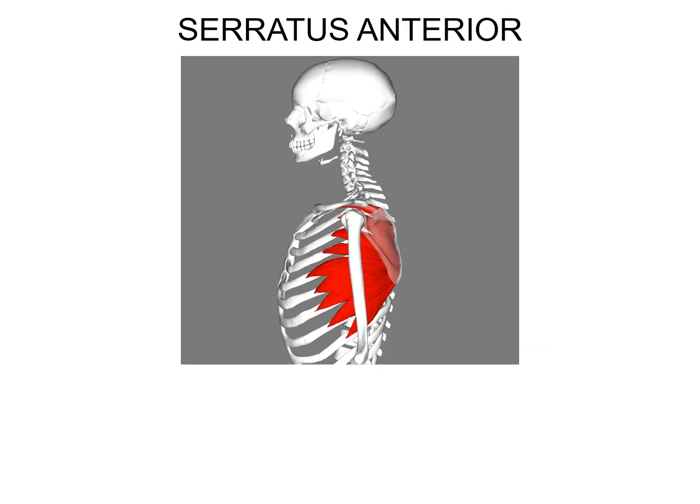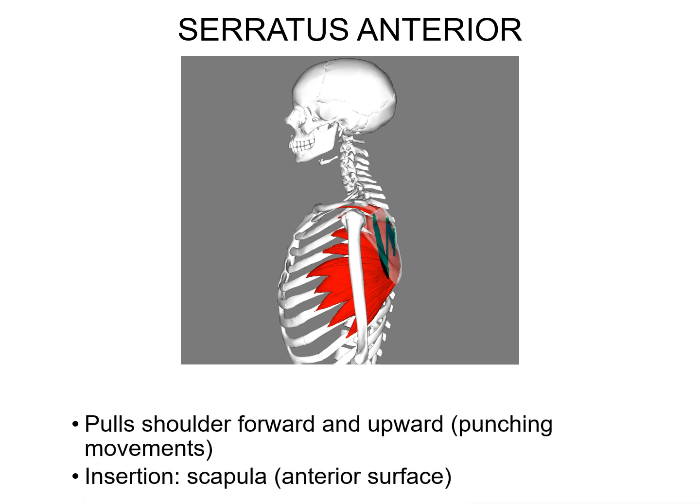The next muscle is the serratus anterior. These muscles sit on top of the ribcage, superficial to those intercostal muscles. They connect to the scapula and their role is to protract the scapula — bringing it forward. If you round your shoulders out or punch something, that is mainly the action of the serratus anterior. Other muscles like the deltoid and triceps help, but the serratus anterior is the prime mover for moving the scapula forward.